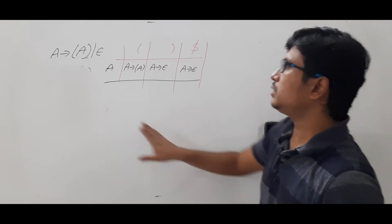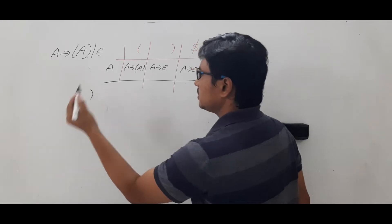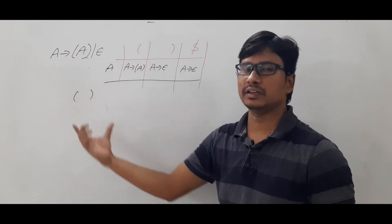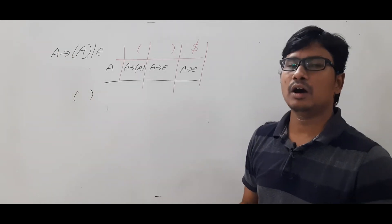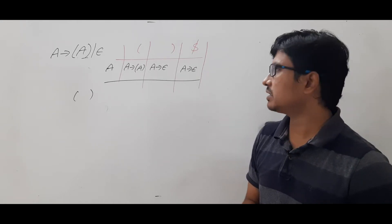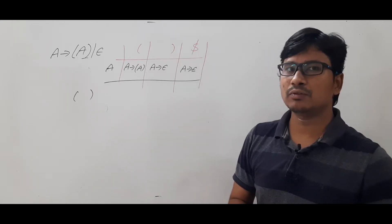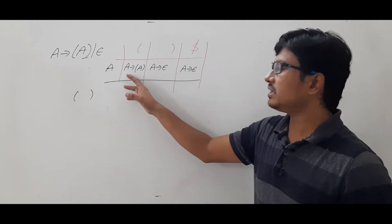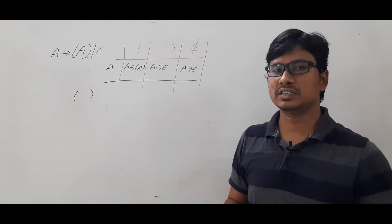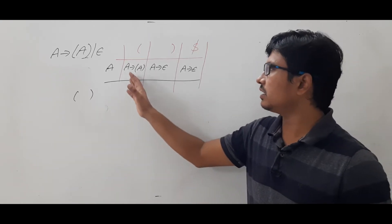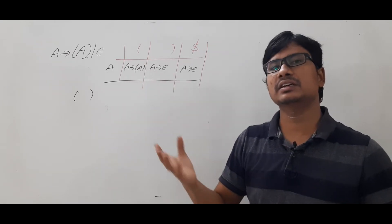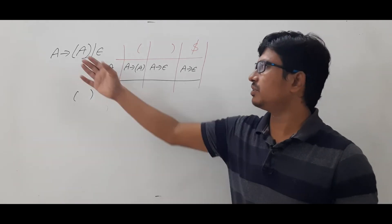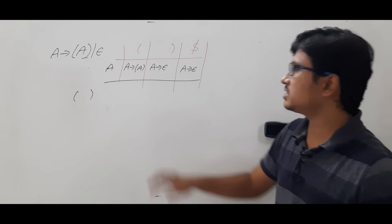We have completed constructing the LL1 parsing table. Now we take the string: open braces closed braces. To verify LL1 parsing is applicable, check that each cell has at most one production. If every entry has only a single production (with errors in empty entries being fine), the grammar can be parsed using LL1 parsing. If any entry has more than one production, LL1 parsing cannot be applied. This grammar passes that check.